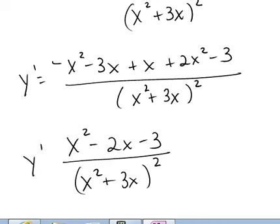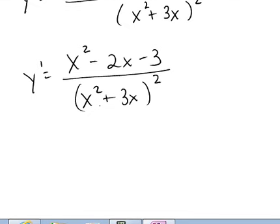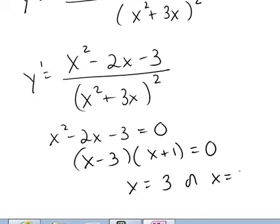We remember that a fraction equals 0 when the numerator equals 0. We do have to think about when the function is undefined, but that's when the denominator is 0, which is not in our interval. Our interval was from 1 to 4, so we only have to worry about the numerator. x squared minus 2x minus 3 equals 0, this factors as x minus 3 times x plus 1, so x equals 3 or x equals negative 1.